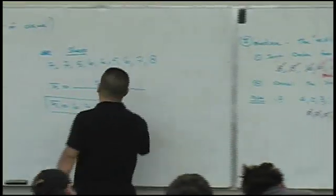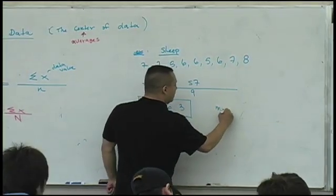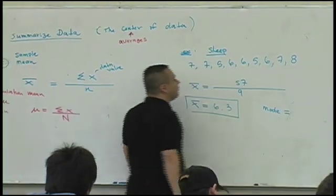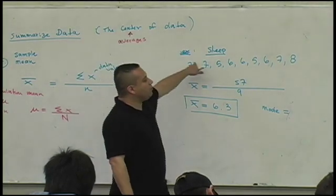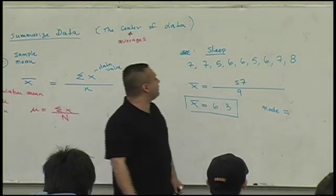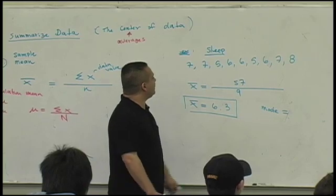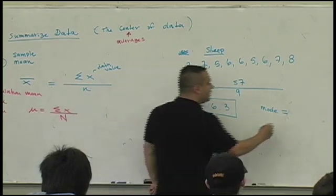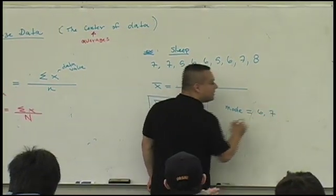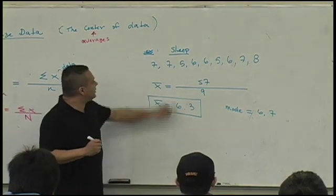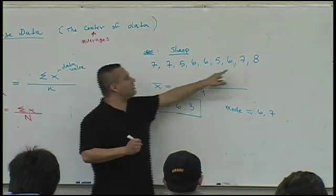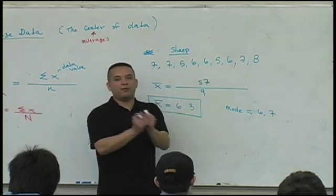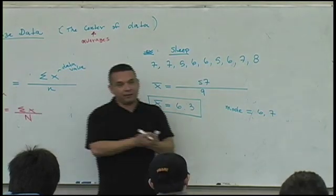Can you guys tell me what the mode is here? What's the mode for this first example? Yeah, we'll do the sleep one. We'll try to do each one so you guys get a sense of this. What is it? You guys are going to say six and seven. Why do you say six and seven? Six shows up how many times? Three. Seven shows up how many times? Three. So they're both equally the most popular. Is that right?